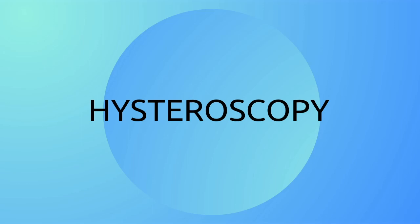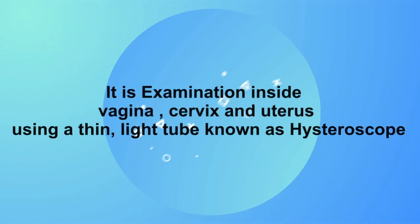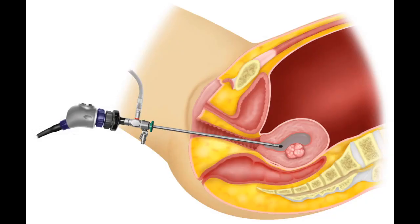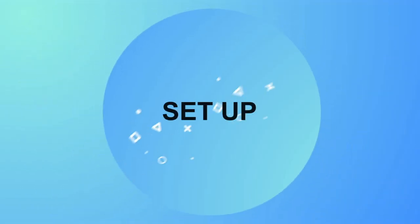We all know hystero means uterus and scopy means seeing. It is examination of the vagina, cervix and uterus using a very thin scope with a distension media of normal saline.